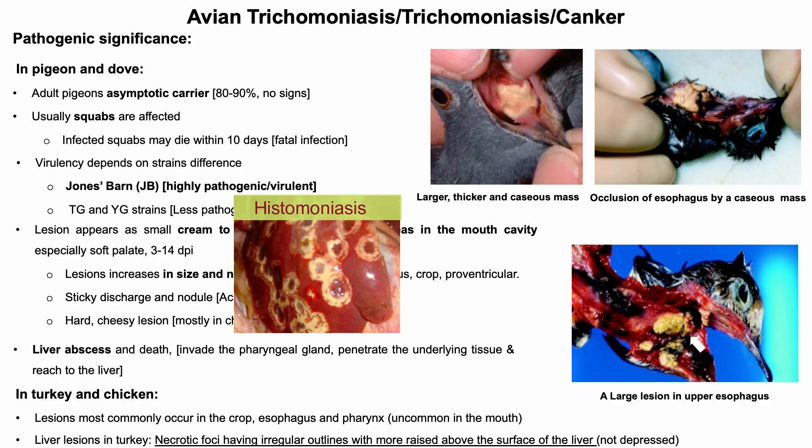Liver lesions in turkey are more or less similar to histomoniasis. However, in trichomoniasis the necrotic lesions in the liver have irregular outlines and are more raised above the liver surface, but not depressed as seen in histomoniasis or blackhead disease of turkey.